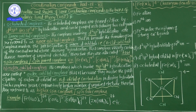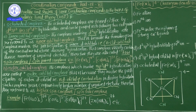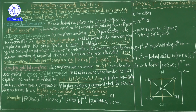In outer orbital complexes, the outermost orbital contains a higher number of unpaired electrons. In contrast, inner orbital complexes have a lower number of unpaired electrons. Outer orbital complexes are called high spin complexes; inner orbital complexes are called low spin complexes. For example, [Fe(CN)₆]⁴⁻ is a low spin complex.